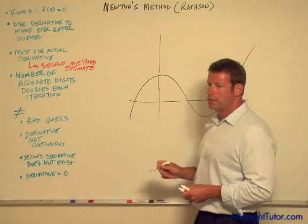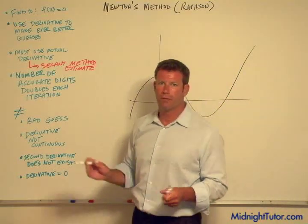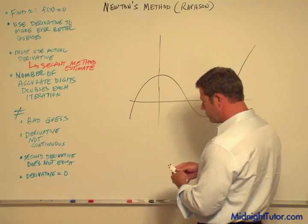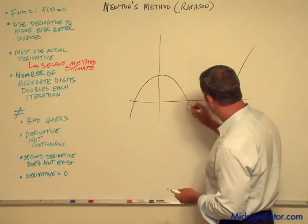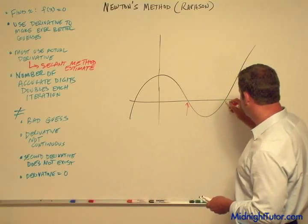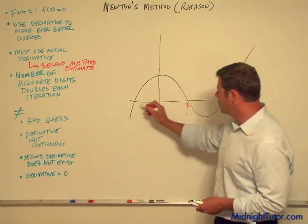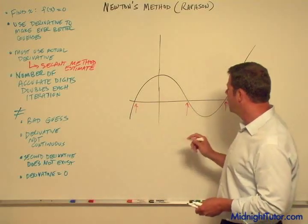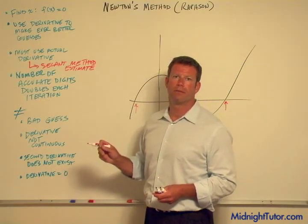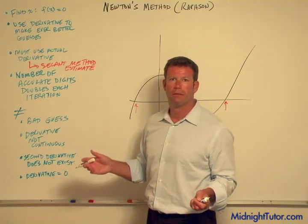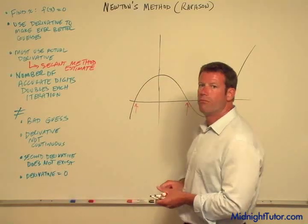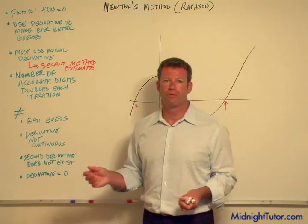This is kind of a cubic equation, although it doesn't really matter. Here we have a point where the function crosses the x-axis, and obviously here we have another point, and then here's a third point. What we're going to do is use calculus to try to find these points more efficiently than we can do it by brute force.